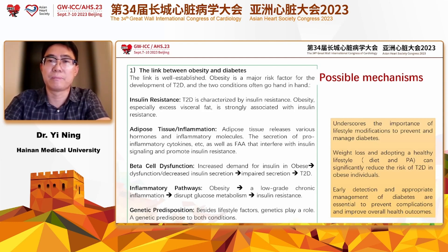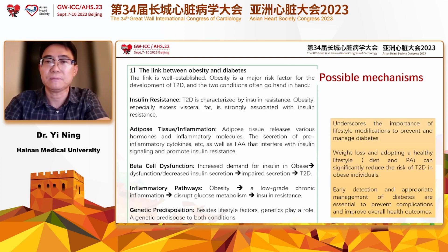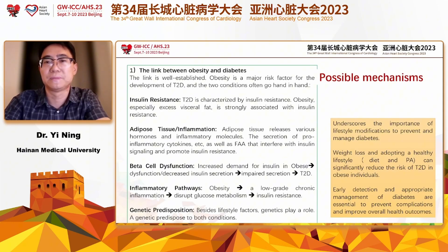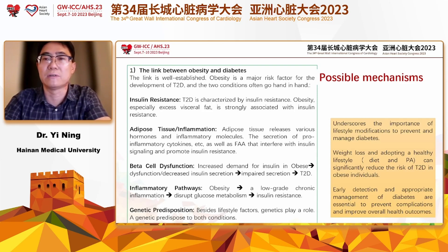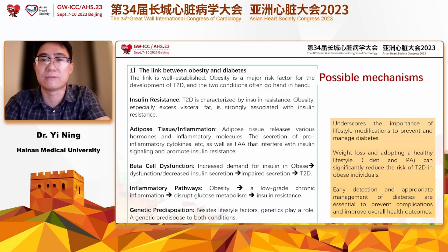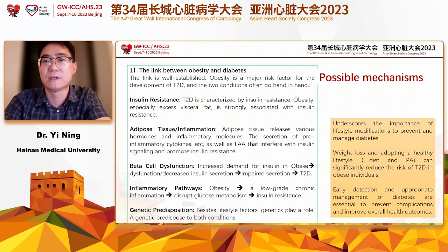When we discuss beta cell dysfunction, in obesity the increased demand for insulin secretion puts pressure on beta cells and causes beta cell dysfunction, further reducing insulin secretion and increasing the risk of type 2 diabetes. Obesity as a low-grade chronic inflammation status disrupts glucose metabolism, further causing insulin resistance and increasing the risk of diabetes, especially type 2 diabetes.